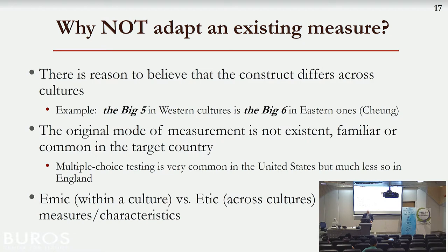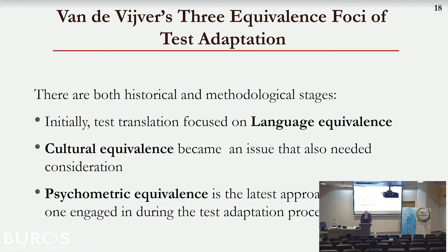Why not adapt? The Big Five versus Big Six issue is one reason. Sometimes the mode of measurement doesn't make sense. In the British system, they were not familiar with multiple choice tests until the last 15 years or so — they did all essay tests in England throughout the school system. So when people started taking multiple-choice tests there, they had a real sense of 'how do I do this?' whereas some cultures have had that for years.